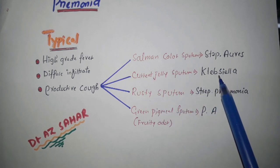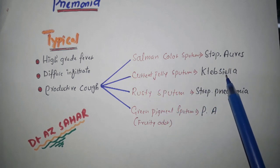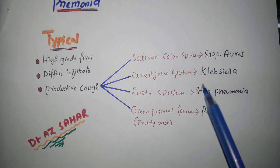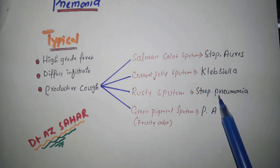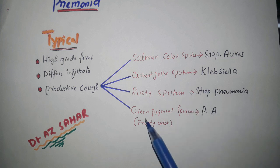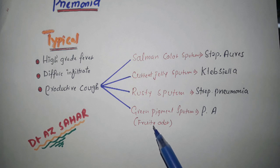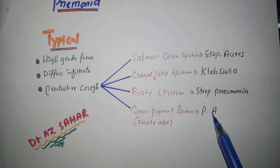Current jelly sputum — the cause is Klebsiella. Rusty sputum — the cause is Strep pneumoniae. Green pigment sputum with a fruity odor — that is Pseudomonas aeruginosa.